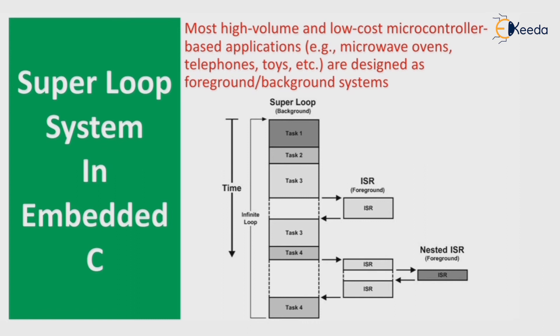These are the background processes, where the ISR includes foreground processes, and a nested ISR is also a foreground process. When an interrupt service routine is triggered, it will pause the current task, the interrupt task executes, and after the interrupt task is completed, it will resume its original task — that is, from task 3. In that way, the time is divided and the super loop system works.